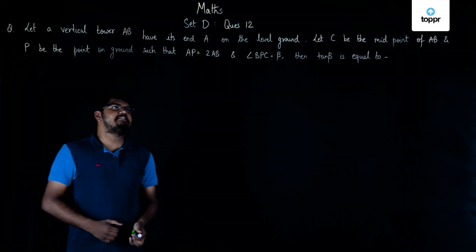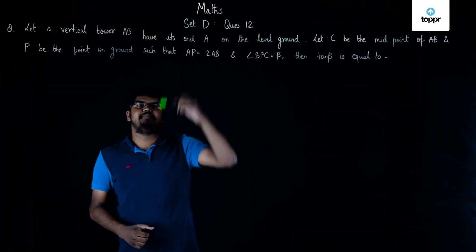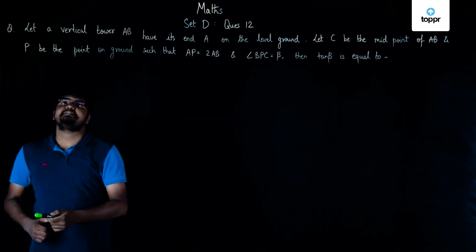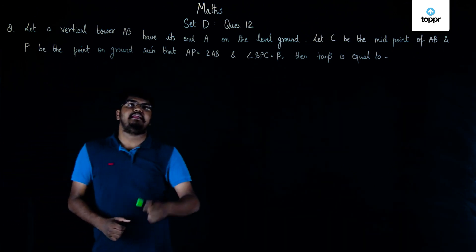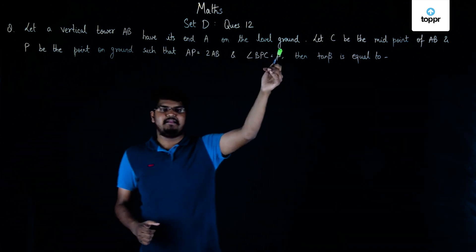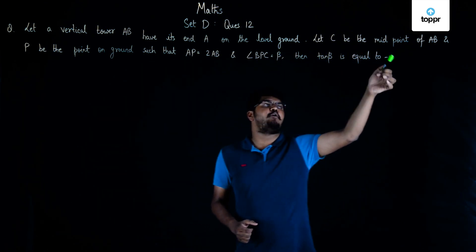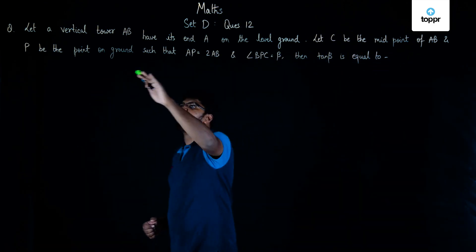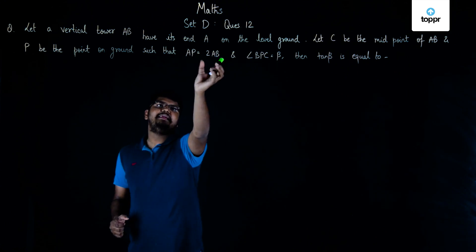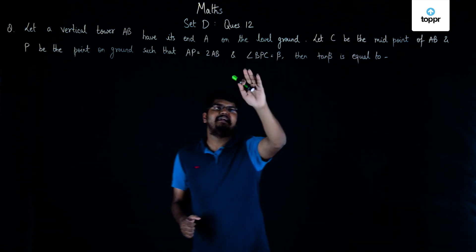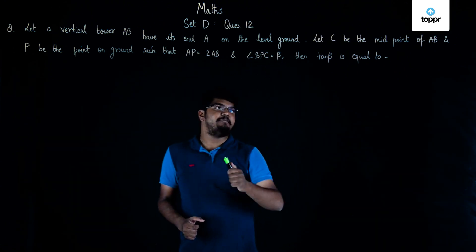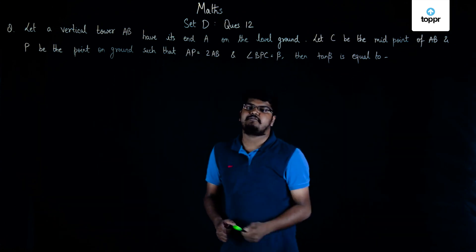Hey guys, now let's look at the solution of question 12 of set D mathematics. The question is: let a vertical tower AB have its end A on the level ground, let C be the midpoint of AB and P be the point on ground such that AP is equal to twice AB and angle BPC is equal to beta. Then we have to find the value of tan beta.